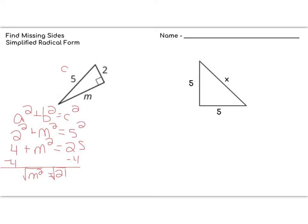I'm going to take the square root of both sides. Typically, at this point we would plug 21 into a calculator, find the square root, and round to some decimal place. We're not going to do that today. We're going to say that m is the square root of 21. We know this is between 4 and 5, pretty close to 4.5, but this is more exact because we haven't rounded anything. We need to check if it simplifies — is there a perfect square that goes into 21? There is not, so we leave it as the square root of 21.